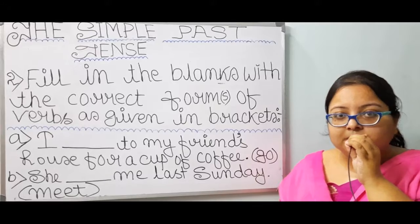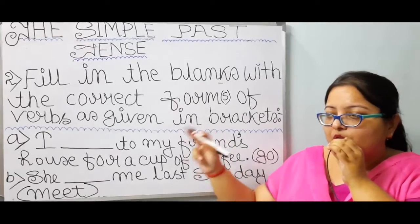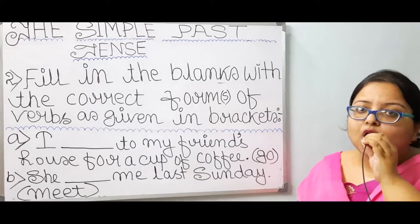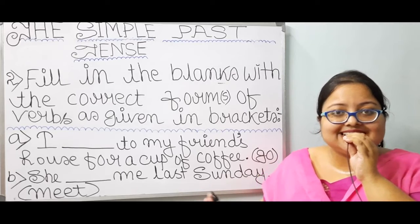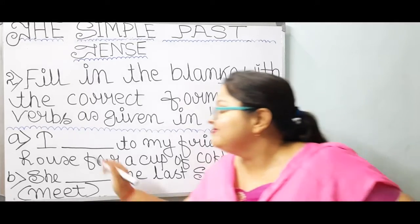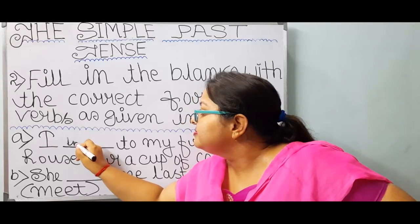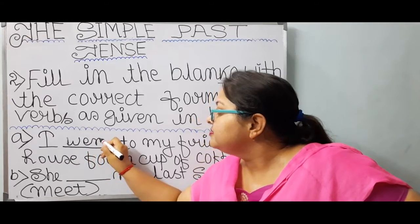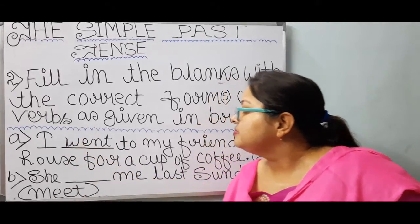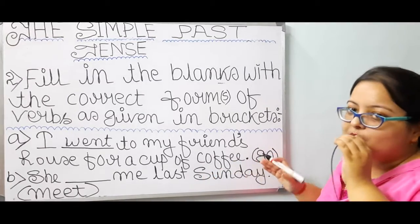The second form or past form is 'went', and the third form, the past participle, is 'gone'. But we don't have to put first and third forms — only the second form has to be put. So, went. Number A: I went to my friend's house for a cup of coffee.